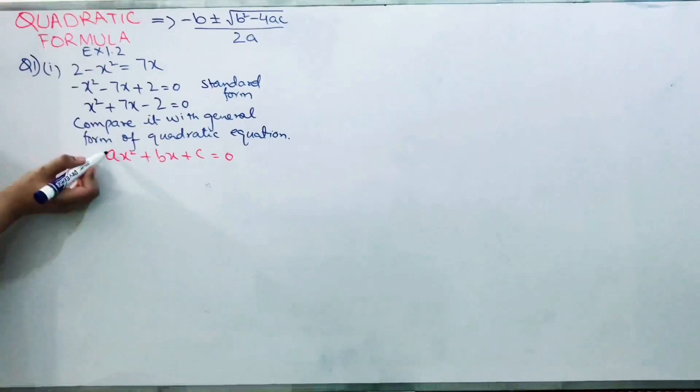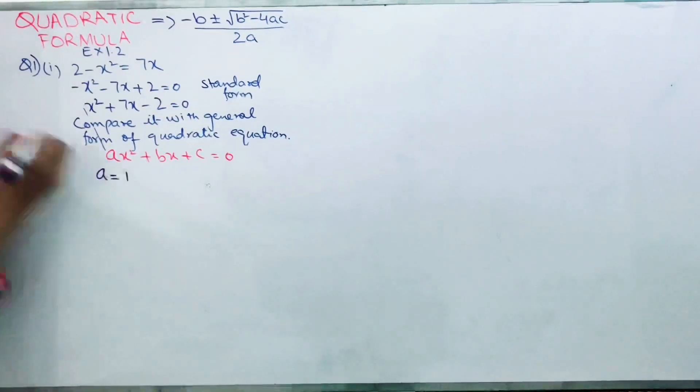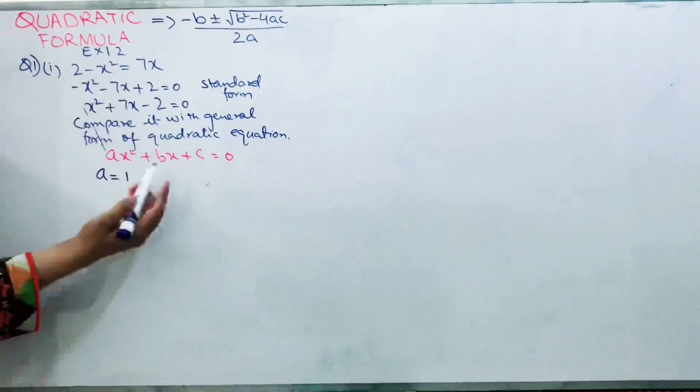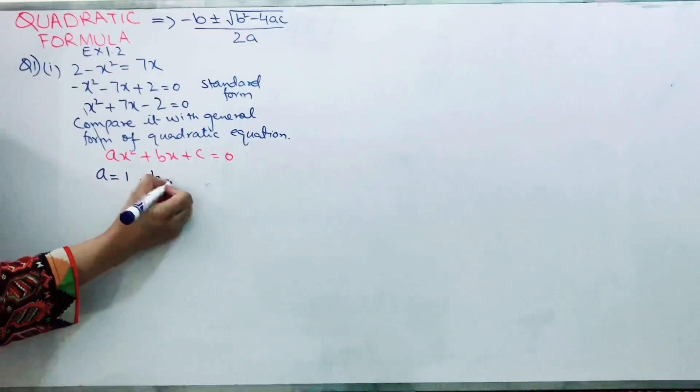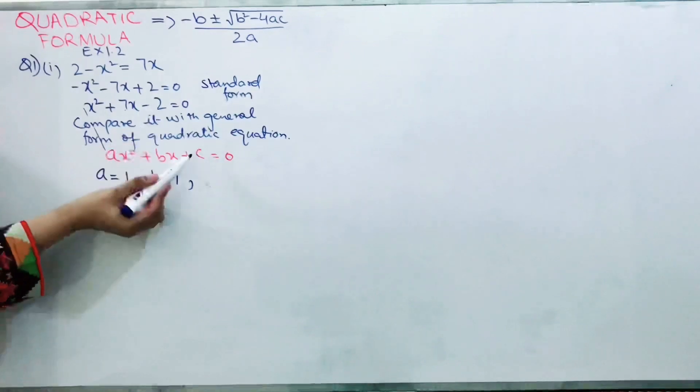So what is the value of a? a is 1, because the coefficient of x square is 1. What is the coefficient of x? That is 7, so the value of b will be 7. And what will be your c? Compare it with this, so c equals minus 2.